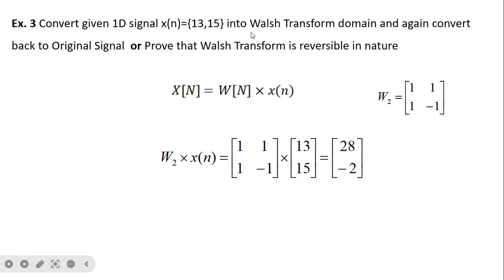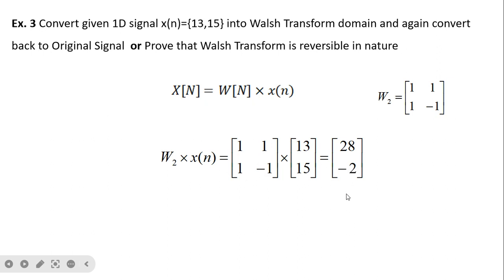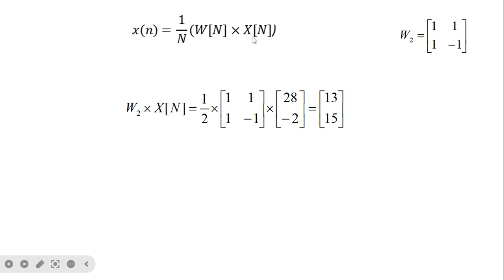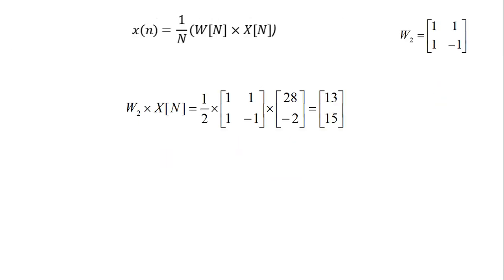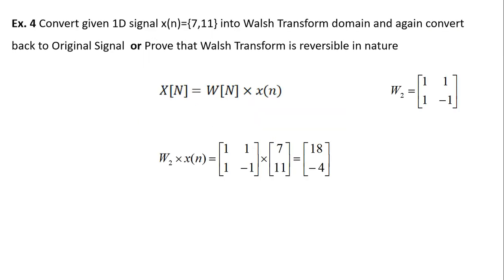If our signal is x(n) = [13, 15], only two values are there, so we cannot use W4 — we use W2. If three values are present, we have to use W4 with one extra zero padded into the signal. For the length-2 signal, we simply multiply W2 by the input signal to get the transform domain value, and (1/2) · W(n) · X(n) gives back the original. Similarly, for signal [7, -11] this same procedure applies and we will get the transform values and the original signal back.